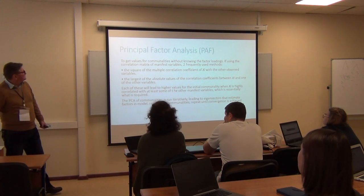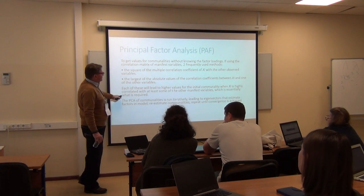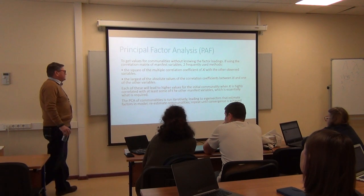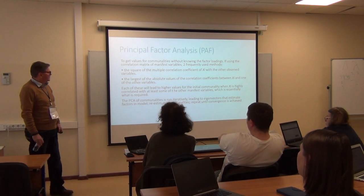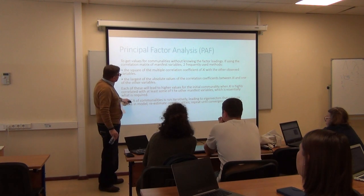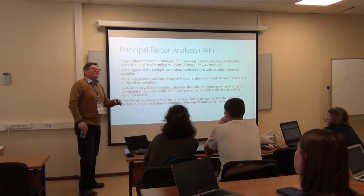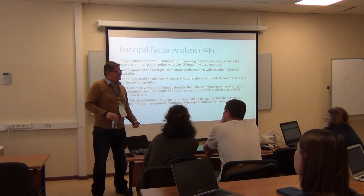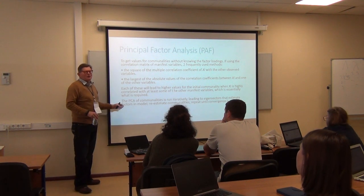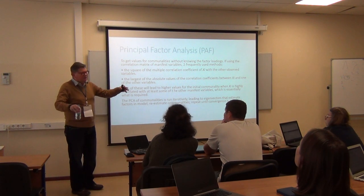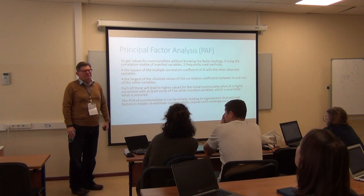Principal axis factoring — the two frequently used methods. It gives high communality values when at least some of the other manifest variables are correlated, which is essentially what's required. Then it runs a principal components analysis on these communalities, so it's factor analysis with a bit of PCA hiding under the hood. It's a kind of compromise backup — try maximum likelihood first if you can.